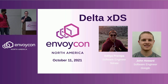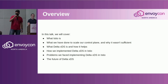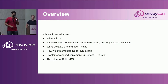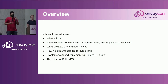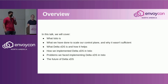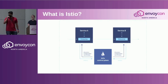which is an Envoy control plane, for about three years. In this talk we'll cover Delta XDS — what Istio is, what we've done to our control plane and why that wasn't sufficient for scaling, the Delta XDS solution and how it helps with scaling, the specific implementation details, the problems and solutions we faced, and the future of Delta XDS within Istio.